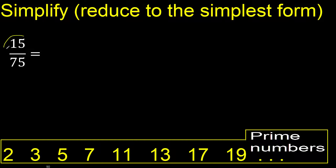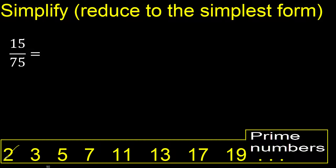15 and 75 cannot be divided by 2 because the last digit is not even. Divided by 3, yes, 75 can be divided by 3 because the sum 7 plus 5 is 12, and 12 can be divided by 3. Therefore 75 divided by 3 is 25, and divided by 3 is 25.